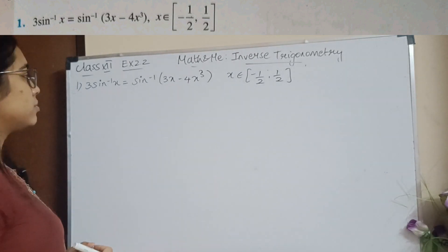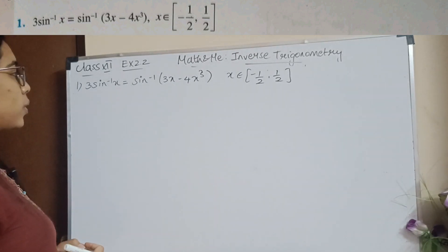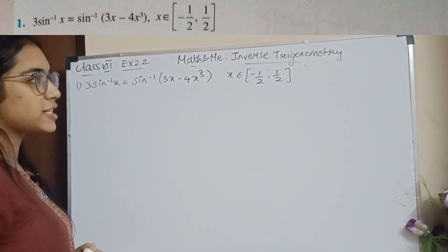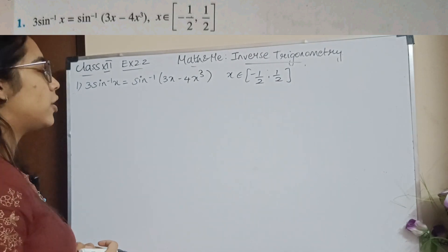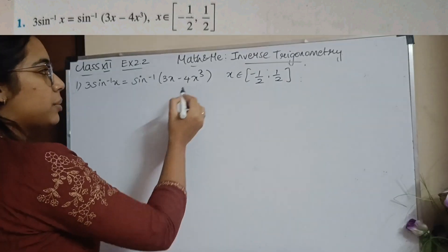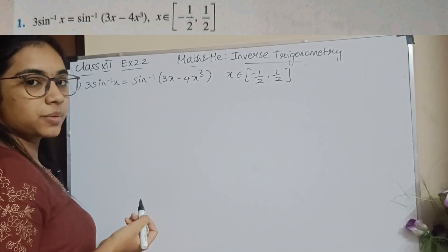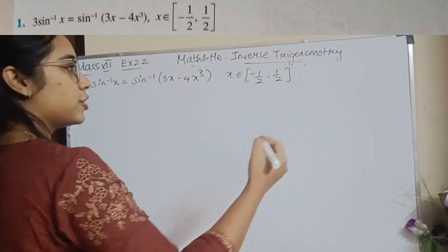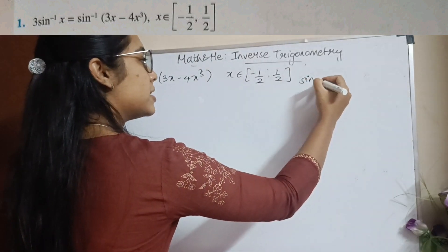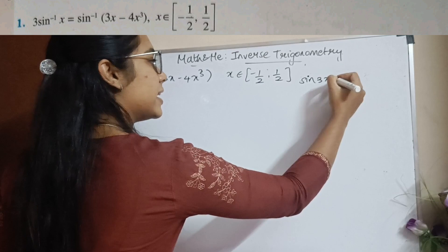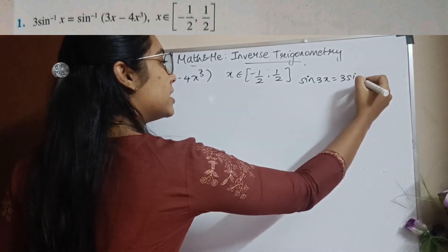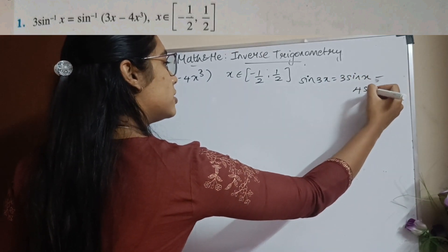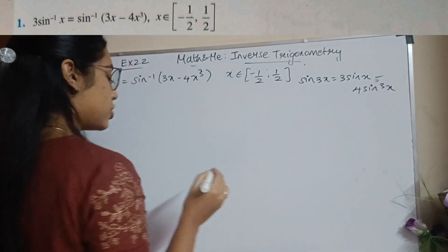Moving on to Exercise 2.2, Question 1: prove that 3sin⁻¹(x) = sin⁻¹(3x - 4x³). To prove this, recall from trigonometry in class 11 that sin(3x) = 3sin(x) - 4sin³(x). This identity is the key formula we will use.